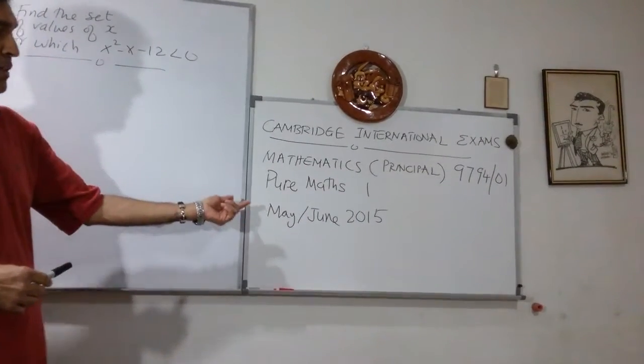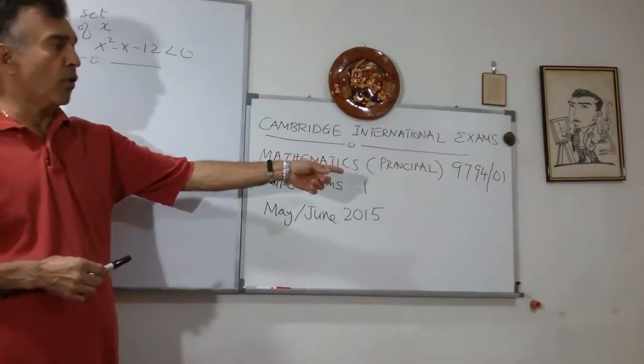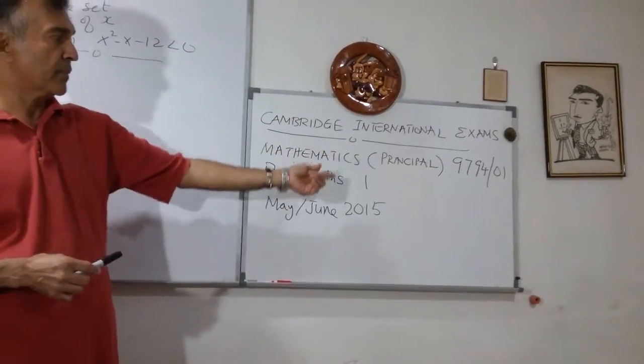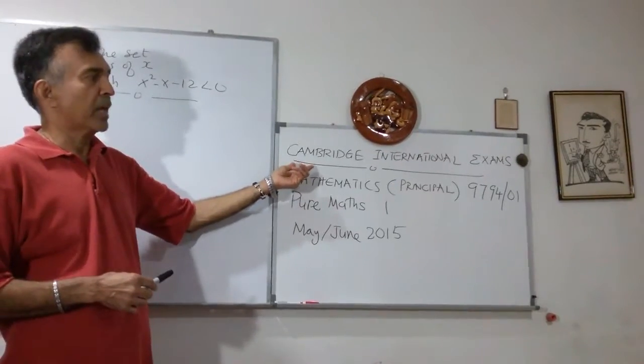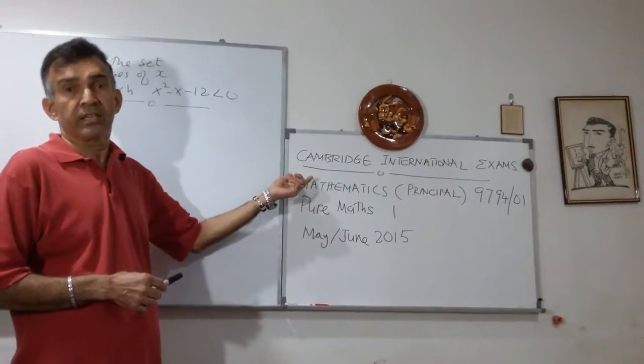Again, the subject code is 9794-01 because this is Pure Maths 1. And this is from the Cambridge International Exam, the CIE exams.